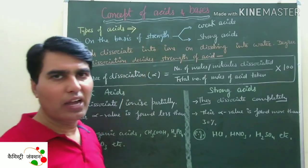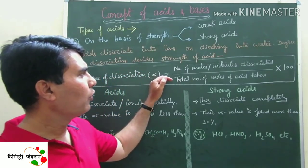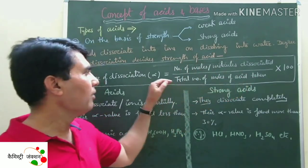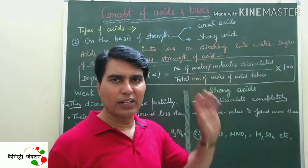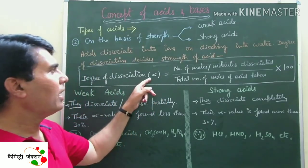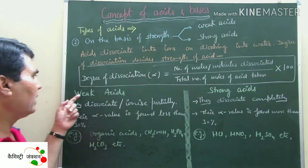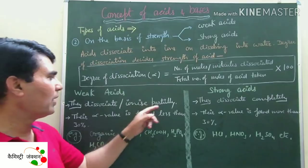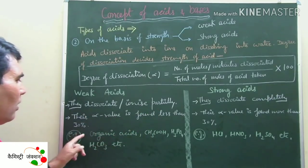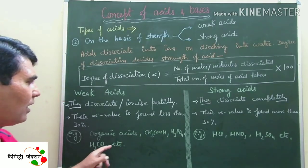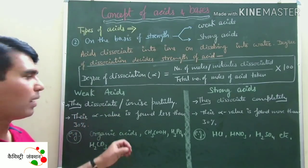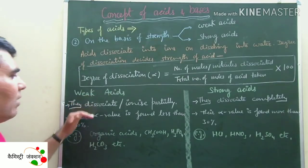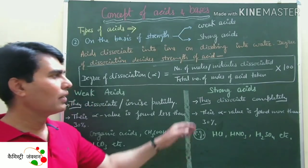The value of alpha decides the strength of the acid. To calculate degree of dissociation (alpha), you divide the number of moles/molecules of acid dissociated by the total number of moles of acid taken, multiplied by 100. Weak acids dissociate or ionize partially — their alpha value is found to be less than 30%. Examples of weak acids include acetic acid, phosphoric acid, and carbonic acid. The number of H+ and hydronium ions produced is low, so alpha value is low, always less than 30% for weak acids.